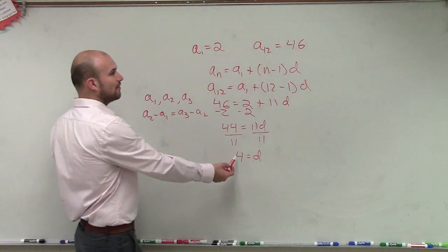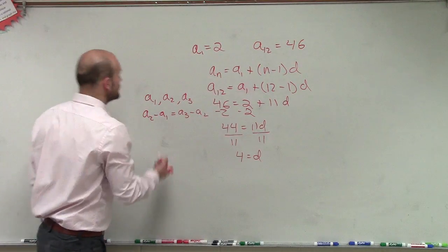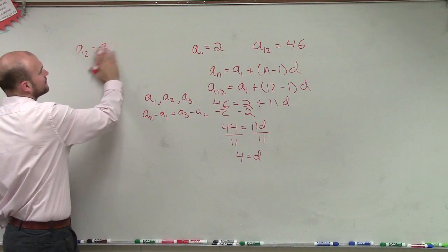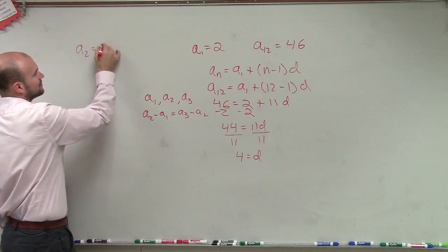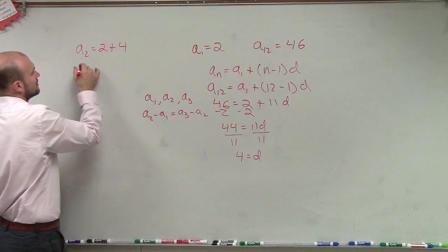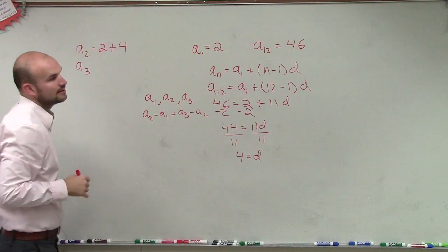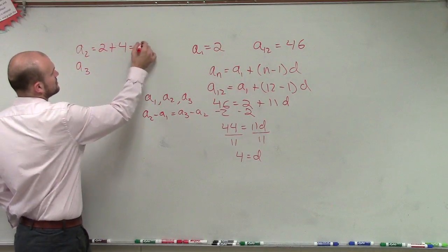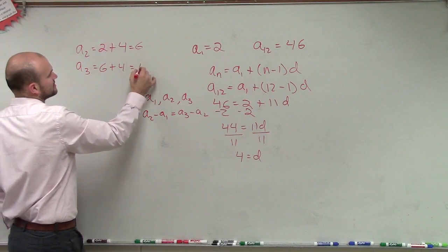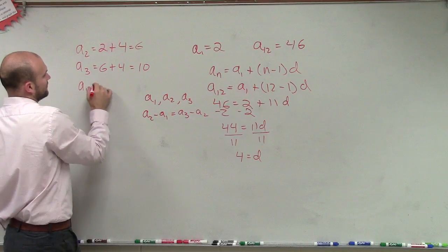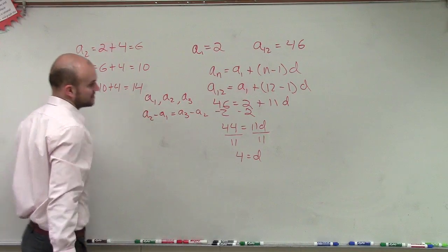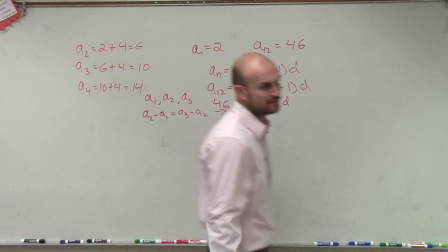So now you know that the difference is 4. If a₁ = 2, then a₂ = 2 + 4, which equals 6. Then a₃ just keeps adding 4: 6 + 4 = 10. a₄ = 10 + 4 = 14. So you're just going to keep on adding 4.